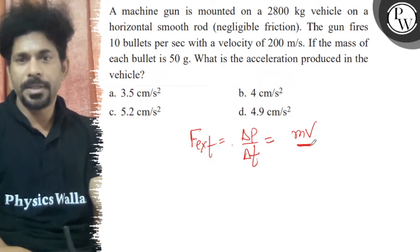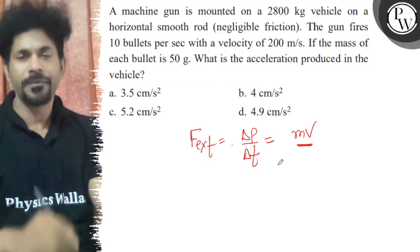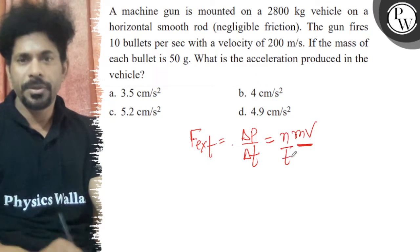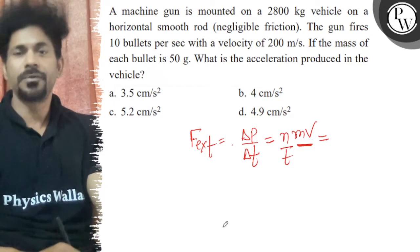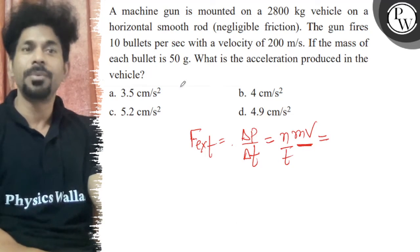That is the change in momentum of each bullet. Let me have n bullets per unit time. So that equals external force and n by t is given as 10 bullets per second.